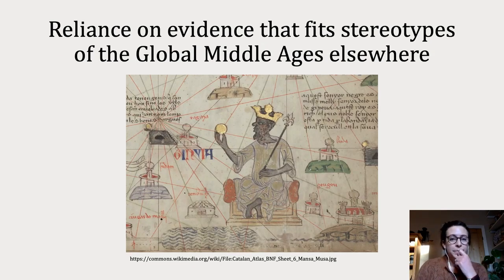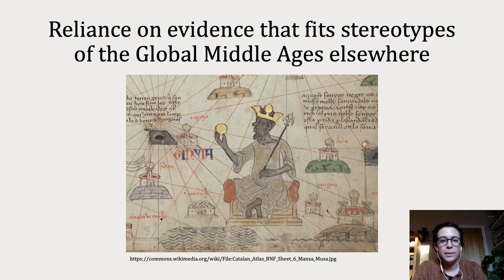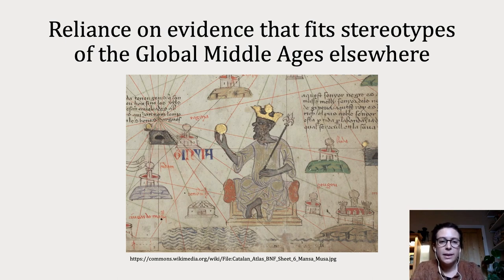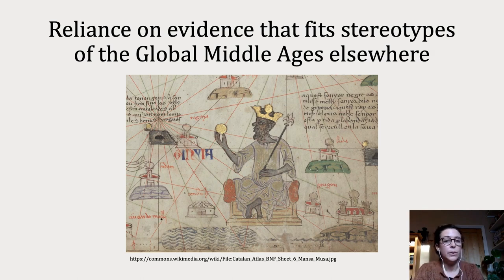Linked to this is also a reliance on evidence that fits stereotypes of the global middle ages elsewhere. The places studied in discussions around situating southern Africa within the global middle ages are those that look like cities and states elsewhere — so Great Zimbabwe features significantly, whereas the rest of the landscape is often depicted as empty. The people brought into this discussion are those potentially consuming objects similar to those in other parts of the world, such as gold or imported items like glass beads.